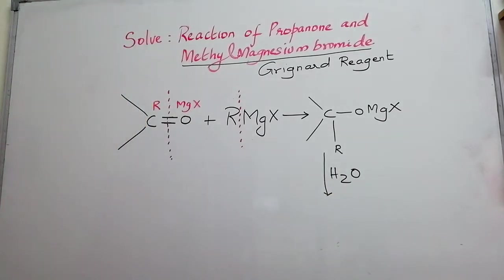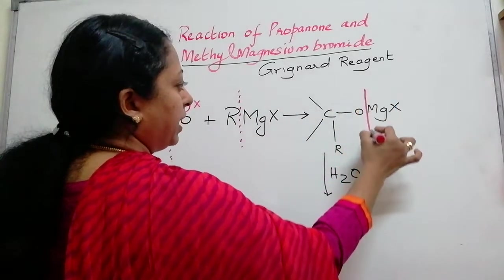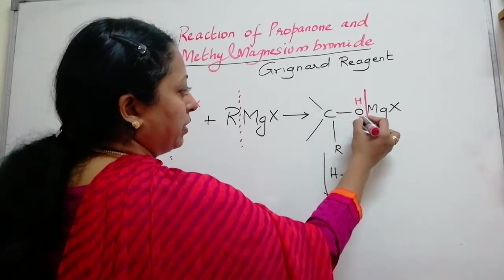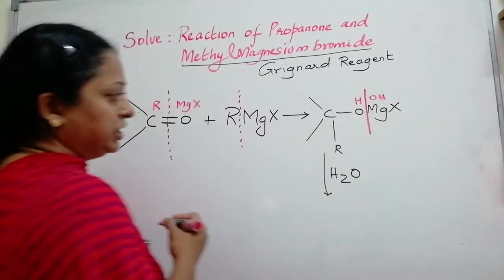In hydrolysis, we have H+ and OH-. So, as a result, there is a bond break between oxygen and magnesium where H is received by oxygen and OH is received by magnesium.